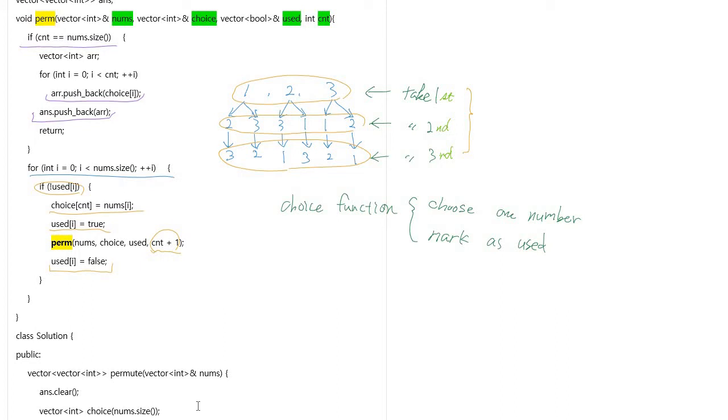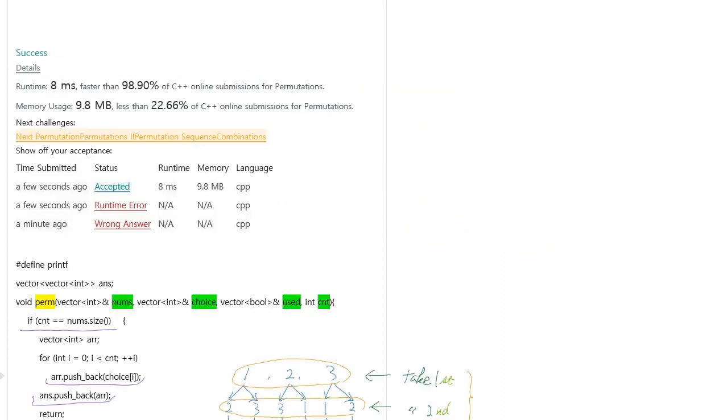concept of using a recursive function to get all possible permutations. This code performs faster than 98.90%. Okay, that's all. Thank you for watching, see you, bye bye.